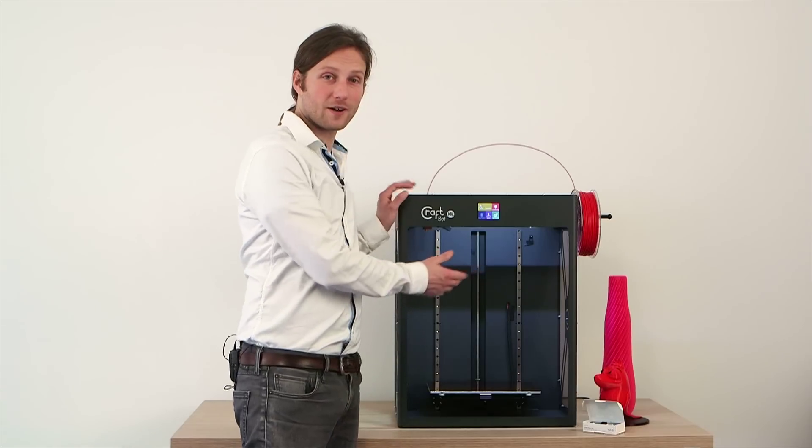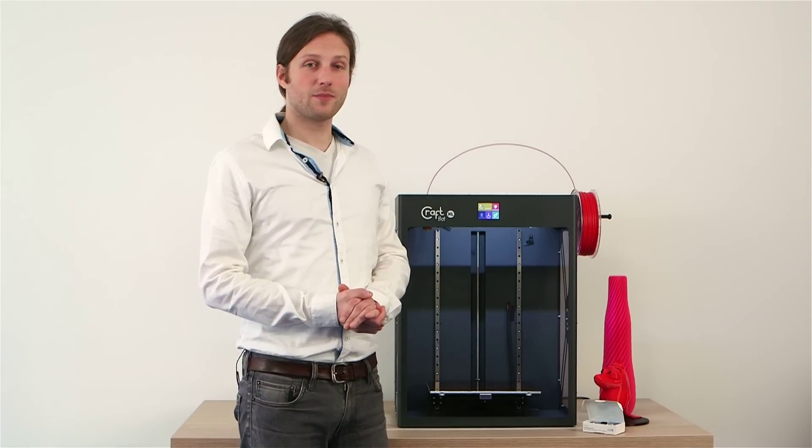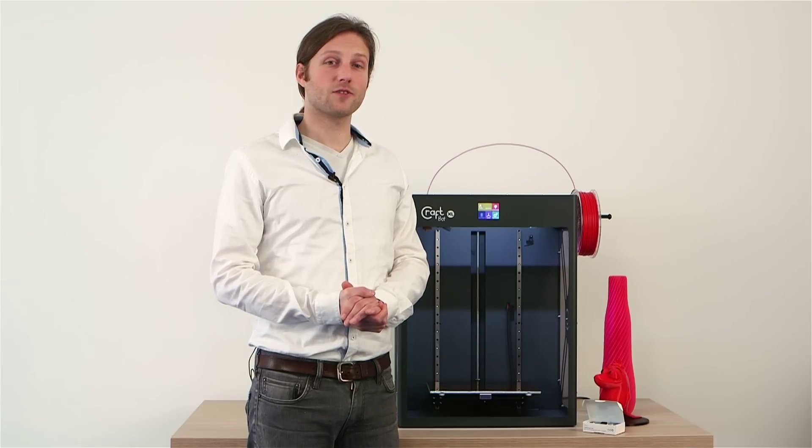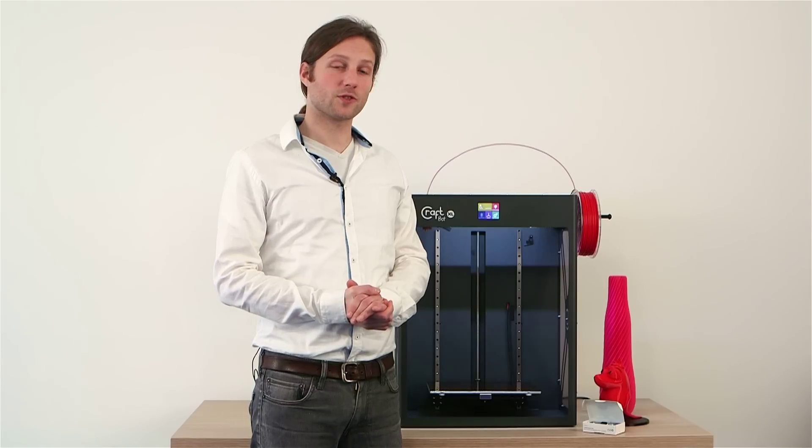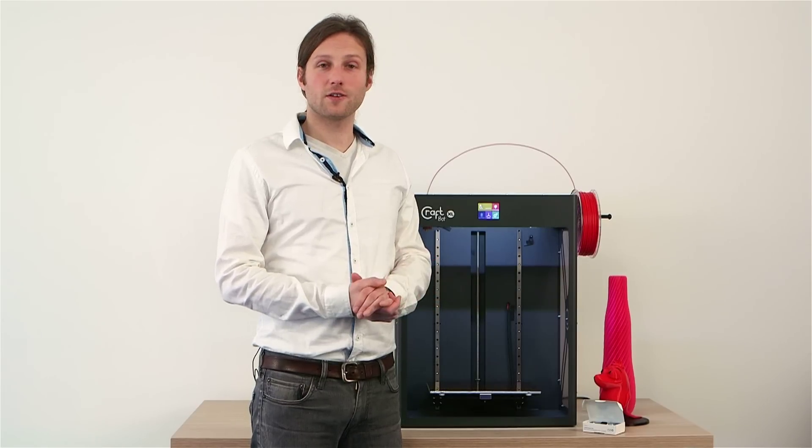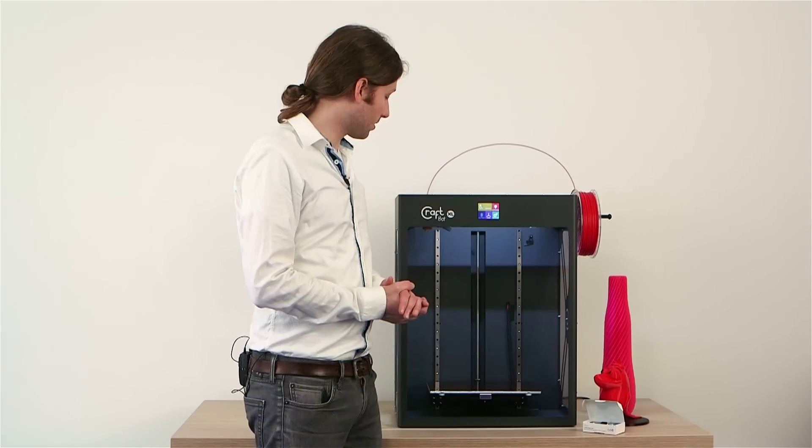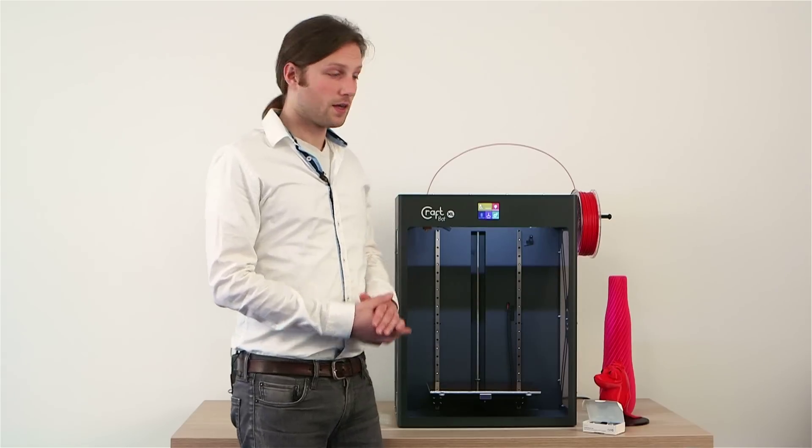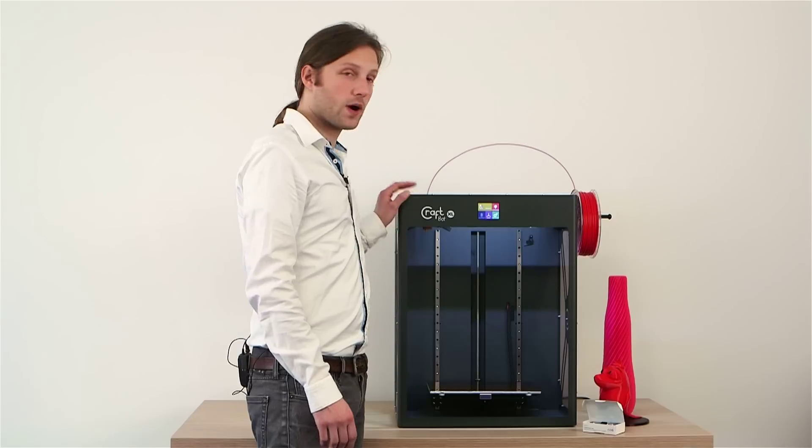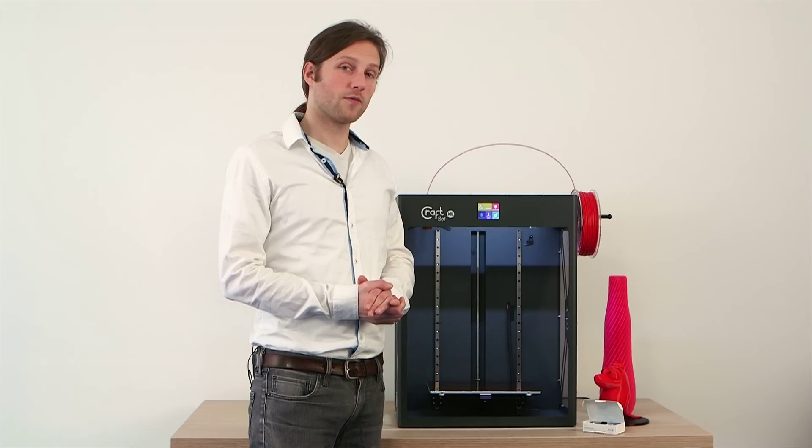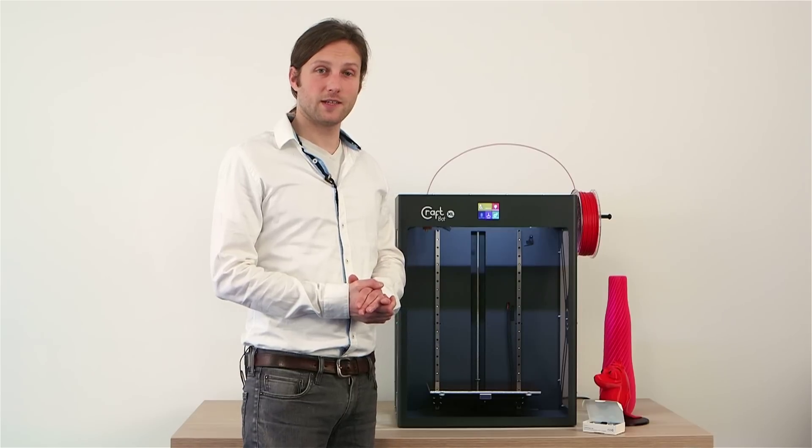As you can see, it's much bigger. Why did we build the XL? Because of demand, especially from our most avid users, anywhere from schools to engineers to prototypers to architects. Some people demanded a bigger print volume. The new print volume of the XL is 20 x 30 x 44 cm or roughly 12 x 8 x 17 inches.